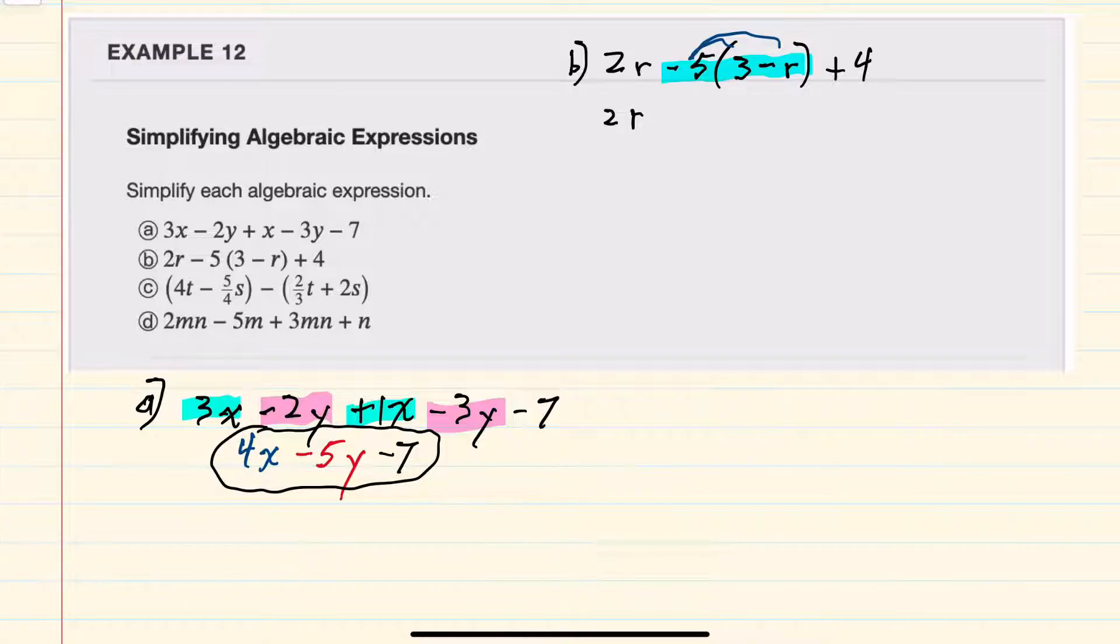I'll start by just bringing down the 2r and then multiplying negative 5 times 3, a minus 15. Negative 5 times a negative r would be a positive 5r. And then again, bringing down the plus 4.